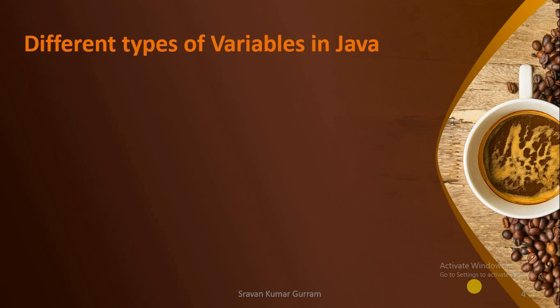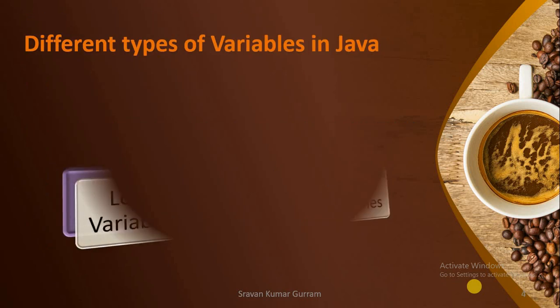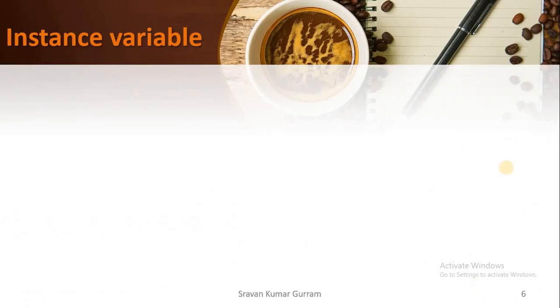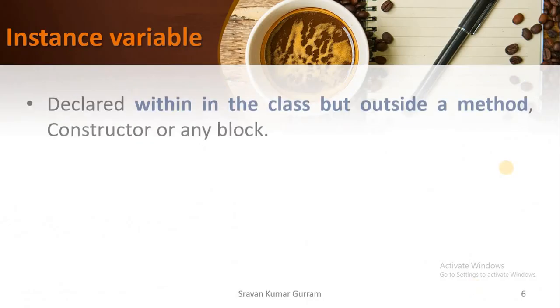In our last session, we discussed that we have three types of variables in Java: local variables, instance variables, and static variables. In our last session, we covered local variables, and in the next session, we will cover static variables. In this video, we are going to discuss instance variable properties and implement each and every property with the help of an example program.